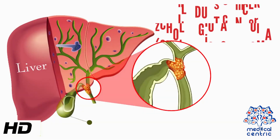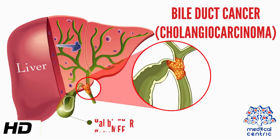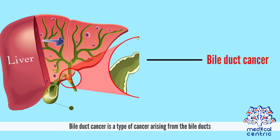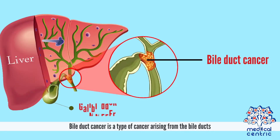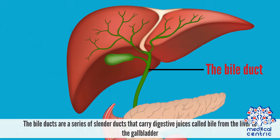Today's topic is bile duct cancer, or cholangiocarcinoma. Bile duct cancer is a type of cancer arising from the bile ducts. The bile ducts are a series of slender ducts that carry digestive juices called bile from the liver to the gallbladder.